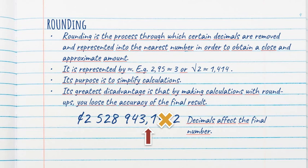How do they work? Rounding is the process through which certain decimals are removed and represented into the nearest number in order to obtain a close and approximate amount. It is represented by this symbol. Example like Russia, 2.95 is pretty much 3. Or square root of 2 is 1.41421356. Its purpose is to simplify calculations. Its greatest disadvantage is that by making calculations with roundups, you lose the accuracy of the final result.